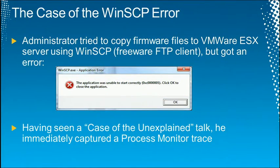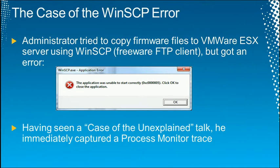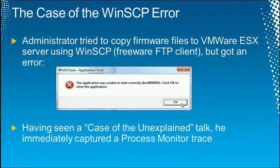In this next case, an admin was managing a VMware ESX server and tried to copy some firmware files using the freeware FTP tool WinSCP. They got an error: 'The application was unable to start successfully, 0xc0000005, click OK to close the application' — a completely useless error message. Just a hex number and press OK, when it's not actually OK.